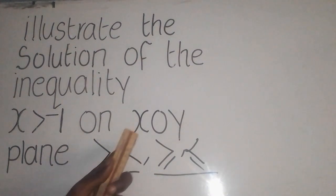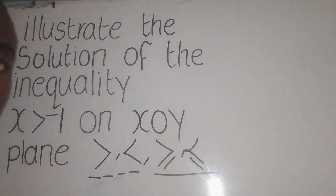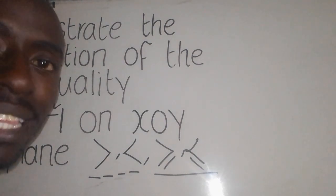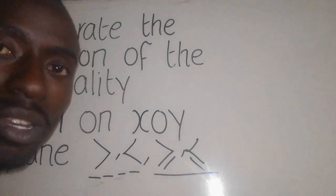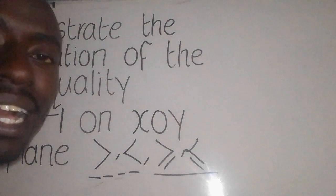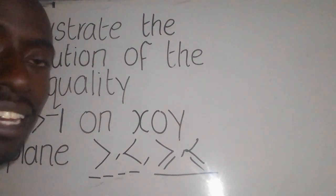When they say x or y plane, it simply means a graph showing the x-axis and the y-axis. The x-axis is the horizontal line. The y-axis is the vertical line.